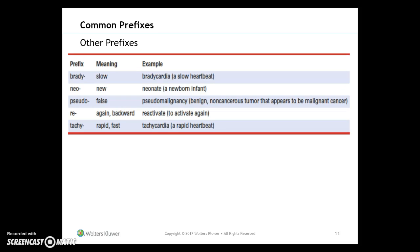Be sure to listen to the words as well as practice writing them. Some other common prefixes: brady- for slow (bradycardia); neo- for new (neonate); pseudo- for false (pseudomalignancy); re- (reactive); tachy- for fast (tachycardia). These can all be practiced in chapter exercises six, seven, and eight.